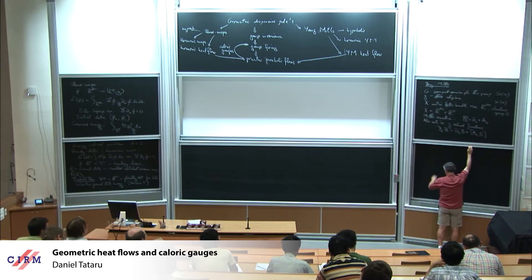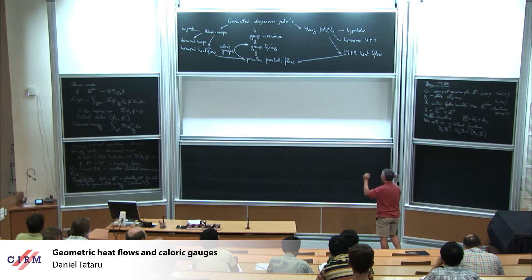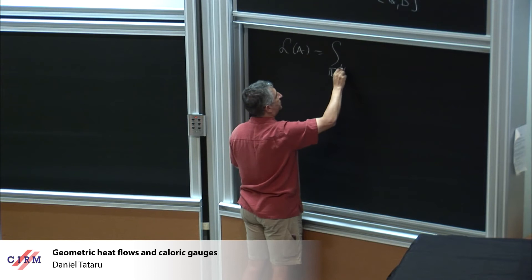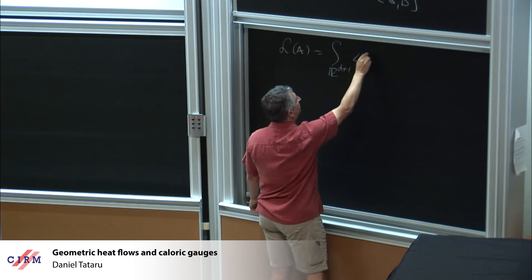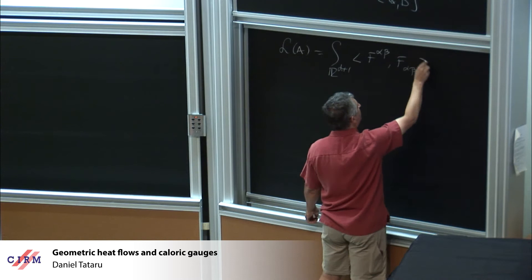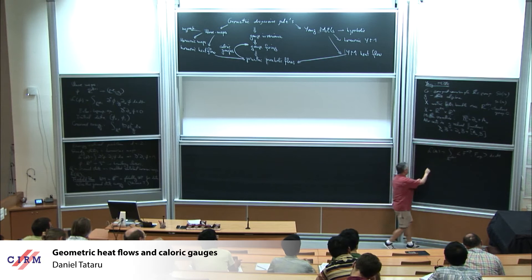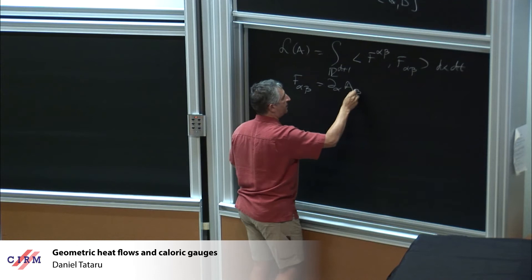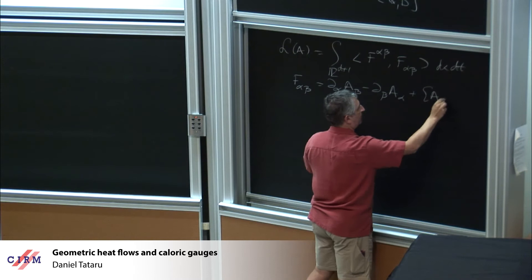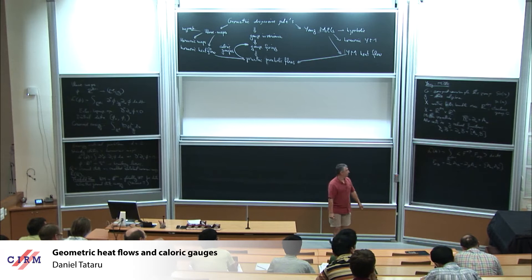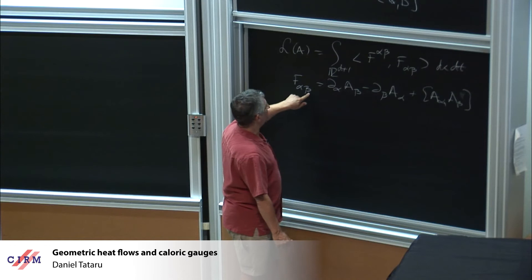Now we take a Lagrangian very similar to the one we had before: L of A equals the integral over R^{d+1} of the inner product of F_{alpha beta} with F_{alpha beta}, where F represents the curvature associated to this connection — it has to do with commutators of covariant derivatives. It's given by the formula F_{alpha beta} = ∂_alpha A_beta - ∂_beta A_alpha + [A_alpha, A_beta]. So the Lagrangian is expressed in terms of the curvature of the connection.